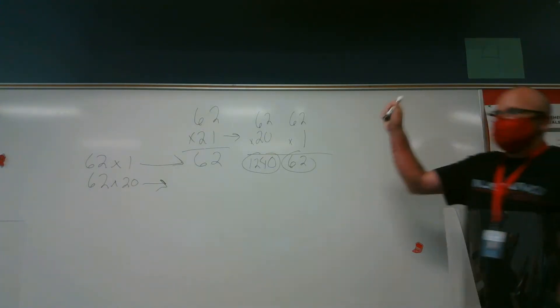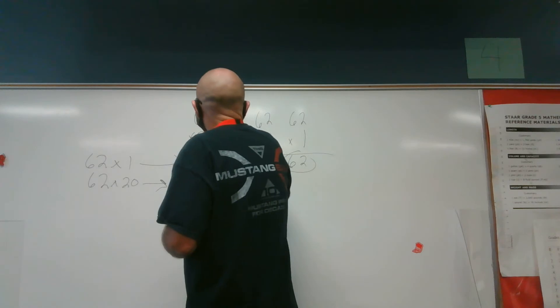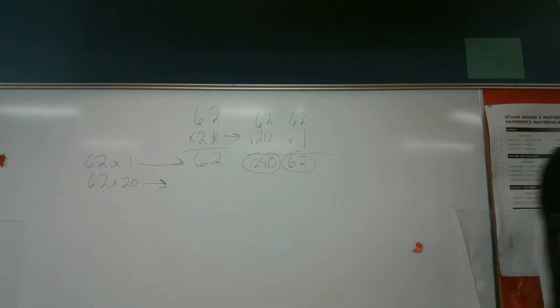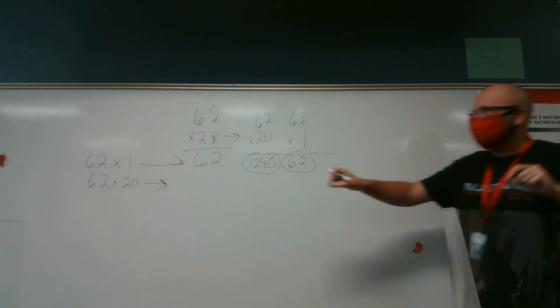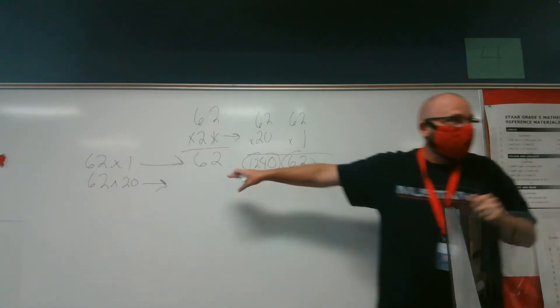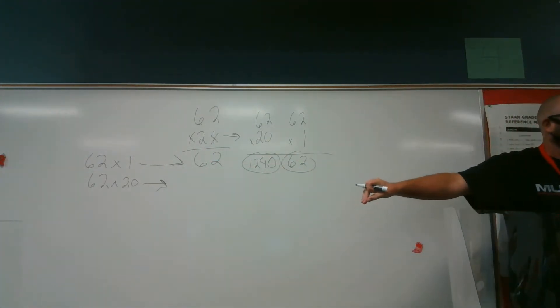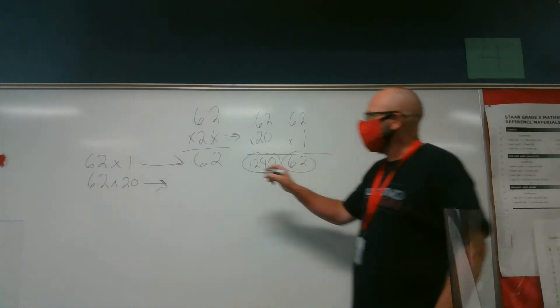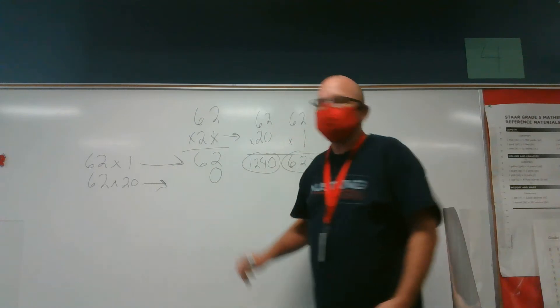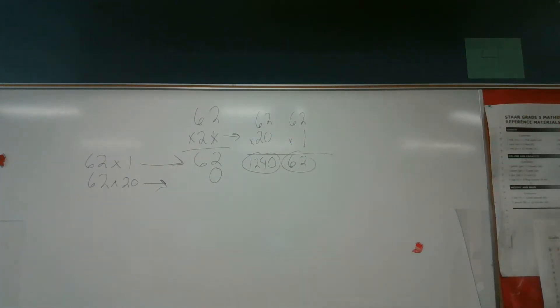I am done with my ones place. My next number is going to start in the tens place. So I don't want to put anything in the ones place. I'm starting in the tens place. So to make sure I don't put anything in the ones place, I'm going to put the zero there. Because I'm multiplying by 20, not 21.